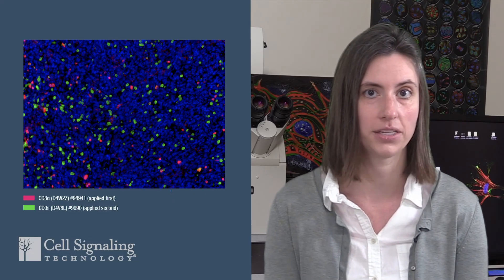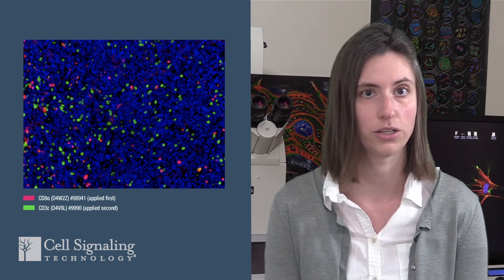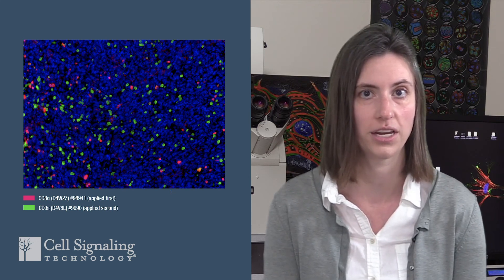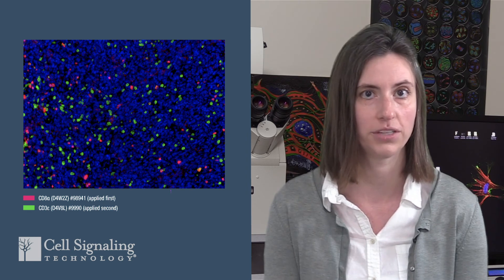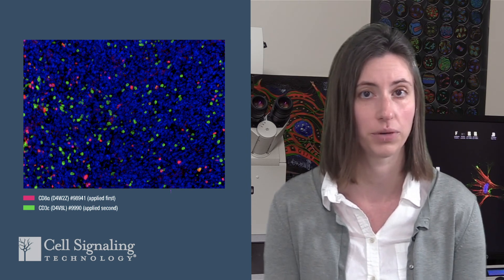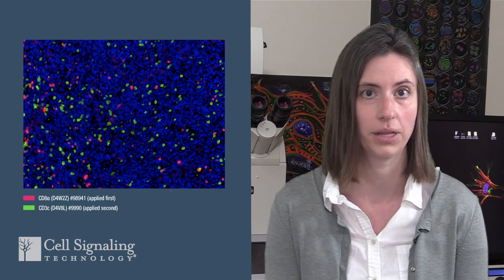Now that we understand epitope degradation, let's define epitope masking. This can happen in MIHC when two or more of your antibodies detect targets expressed in the same subcellular compartments of the same cell types. Tyramide deposition from the first antibody can blanket nearby epitopes, reducing the signal of subsequent antibodies in your panel. In this MIHC analysis of a metastatic tumor in mouse lung, CD8 staining in red is largely exclusive of CD3 staining in green. Because we would not expect a majority of CD8 positive T cells to be CD3 negative, this suggests epitope masking is taking place.